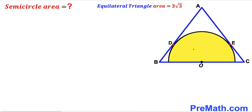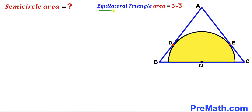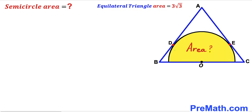Welcome to pre-math. In this video we have got a yellow shaded semicircle with center O fully inscribed in an equilateral triangle ABC, as you can see in the given diagram, such that D and E are our points of tangency. Moreover, the area of this equilateral triangle has been given to us as three times square root of three square units, and our task is to calculate the area of this yellow shaded semicircle.